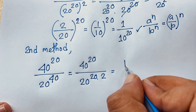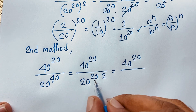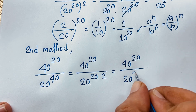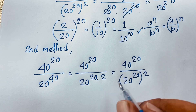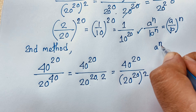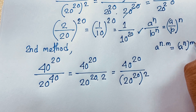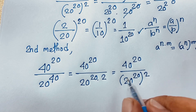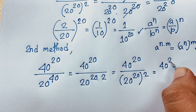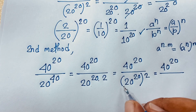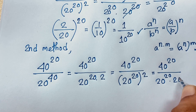Now I can see 40 power 20 over 20 power 20, bracket power 2. According to the exponential law a^(n times m) = (a^n)^m, I rewrite the denominator (20^20)^2 as 20^20 times 20^20.